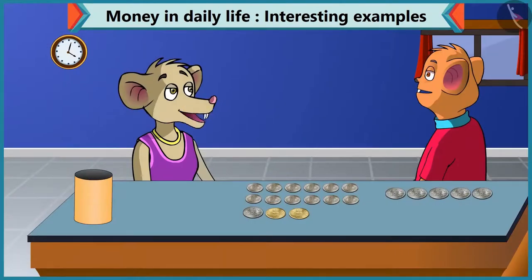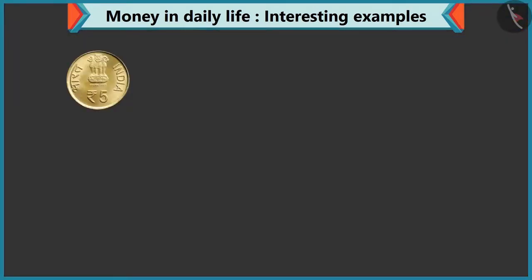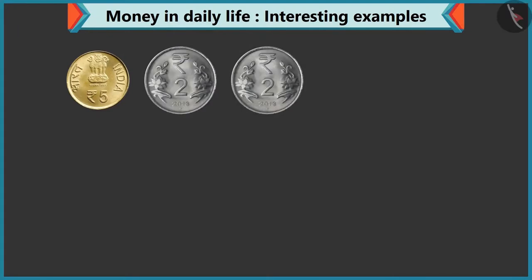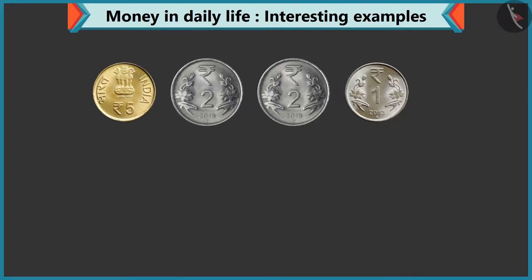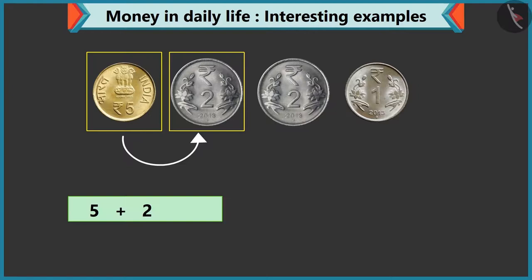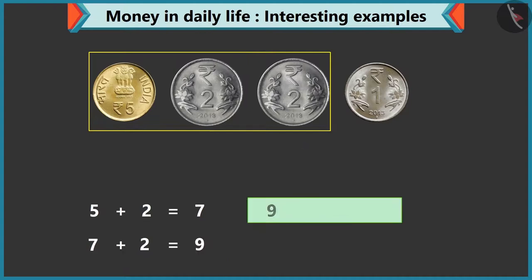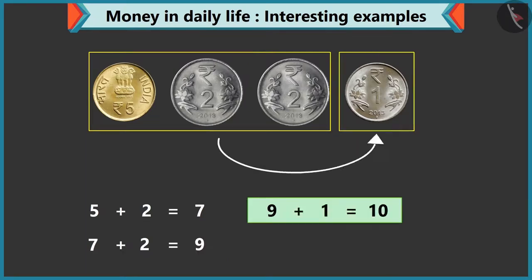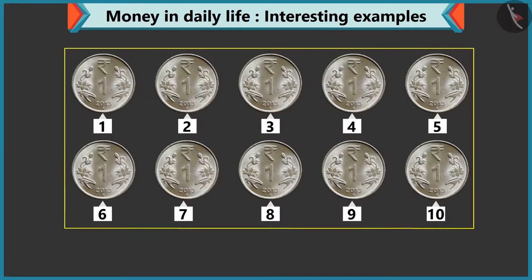Yes, can we make 10 rupees in any other way? Tell me. Yes, you can make 10 rupees by adding a coin of 5 rupees, a 2 rupees coin and a 1 rupee coin. Yes, if we add 5 and 2, it is 7. 7 by adding 2 will become 9 and 9 by adding 1 to it makes 10. Even if you add 10 coins of 1 rupee, that will make 10 rupees too.